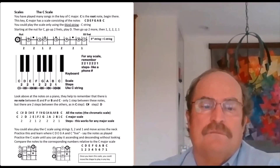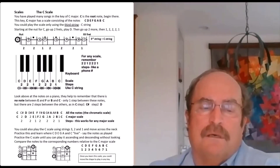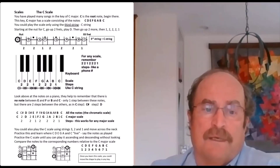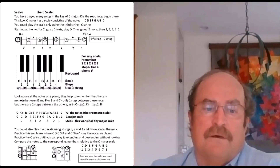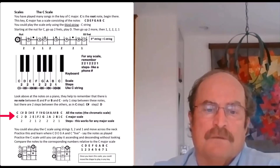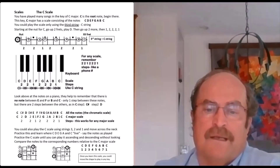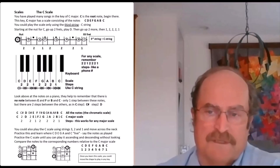To do this exercise on paper, write all the notes — you can use sharps or flats. It'd be helpful to know whether the key contains sharps or flats, but you can write all the notes just like looking at all the frets. Then walk two steps to D, D-sharp, E — E to F is one step, two steps to G, two to A, two to B, and one to C. That's the major scale.